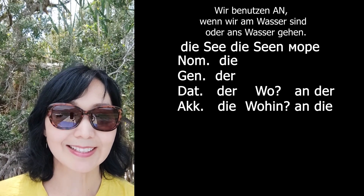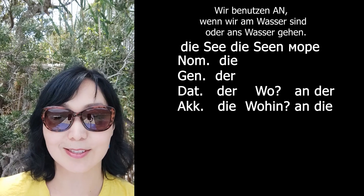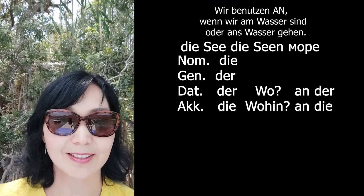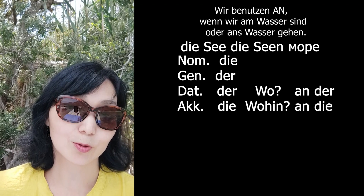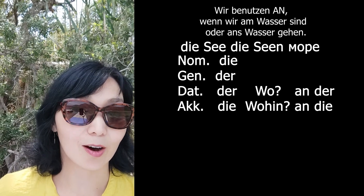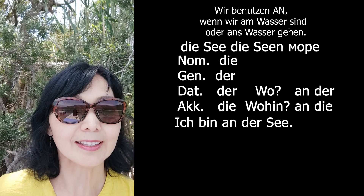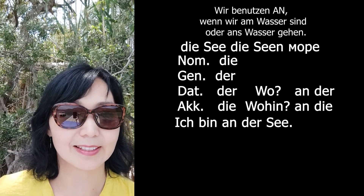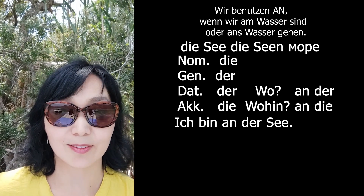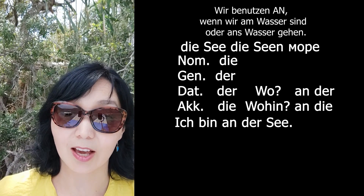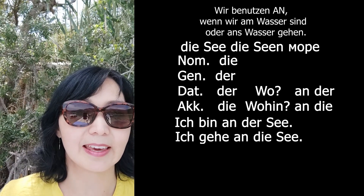Ещё раз: die, der, der, die. И мы знаем: если вопрос 'wo' — «я где?» — то нам нужен Dativ. Ich bin an der See. — Я на море (die See, женский род, Dativ — der). А если я иду к морю: Ich gehe an die See.